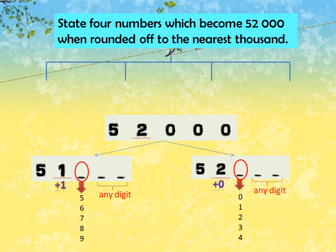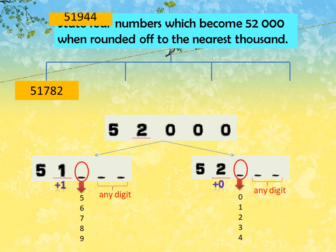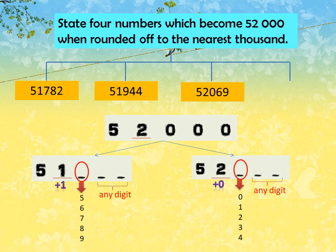For the second possibility: if 2 wants to get 2, of course kita plus 0. 2 plus 0, we get 2. For plus 0, the digit at the circle can be 0, 1, 2, 3, or 4. The last 2 digits are bebas — any digit. Some examples: 51,782; 51,944; 52,069; 52,416. That gives us 4 answers.